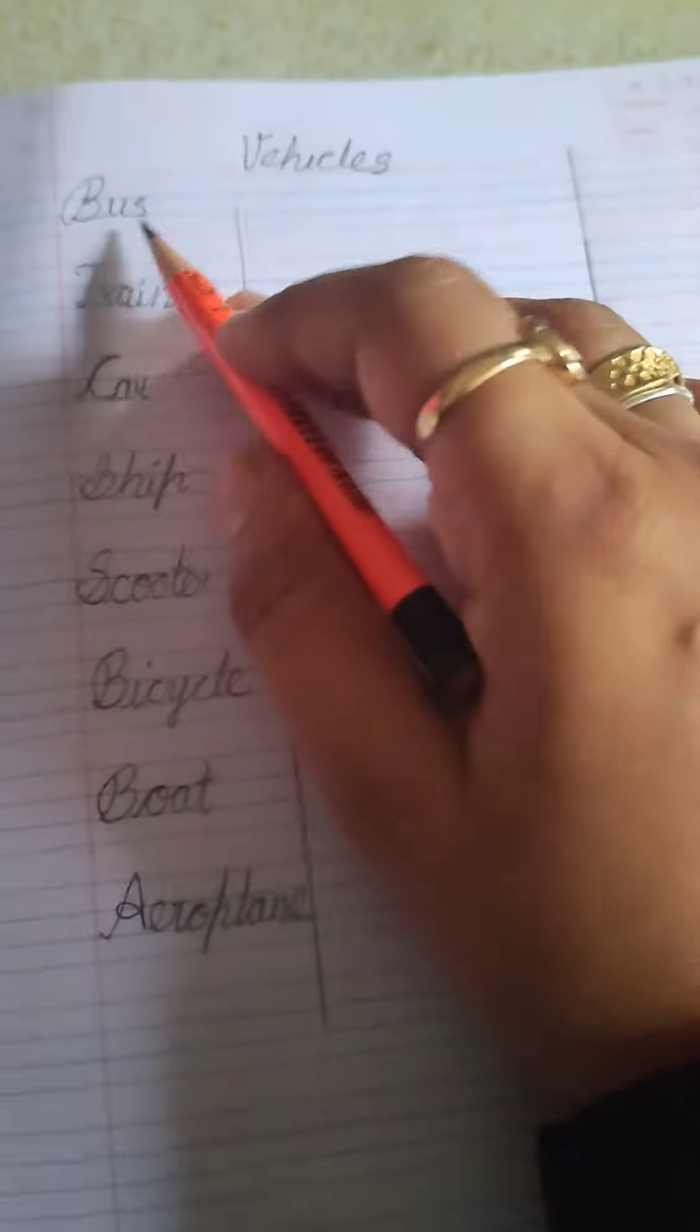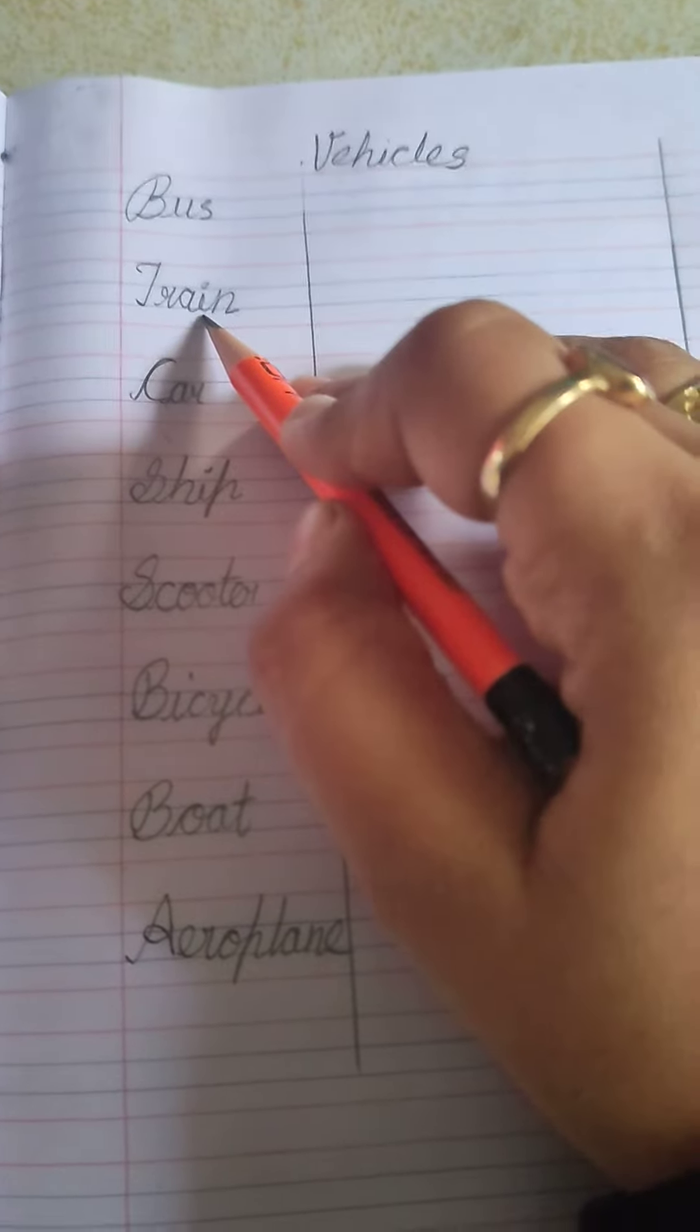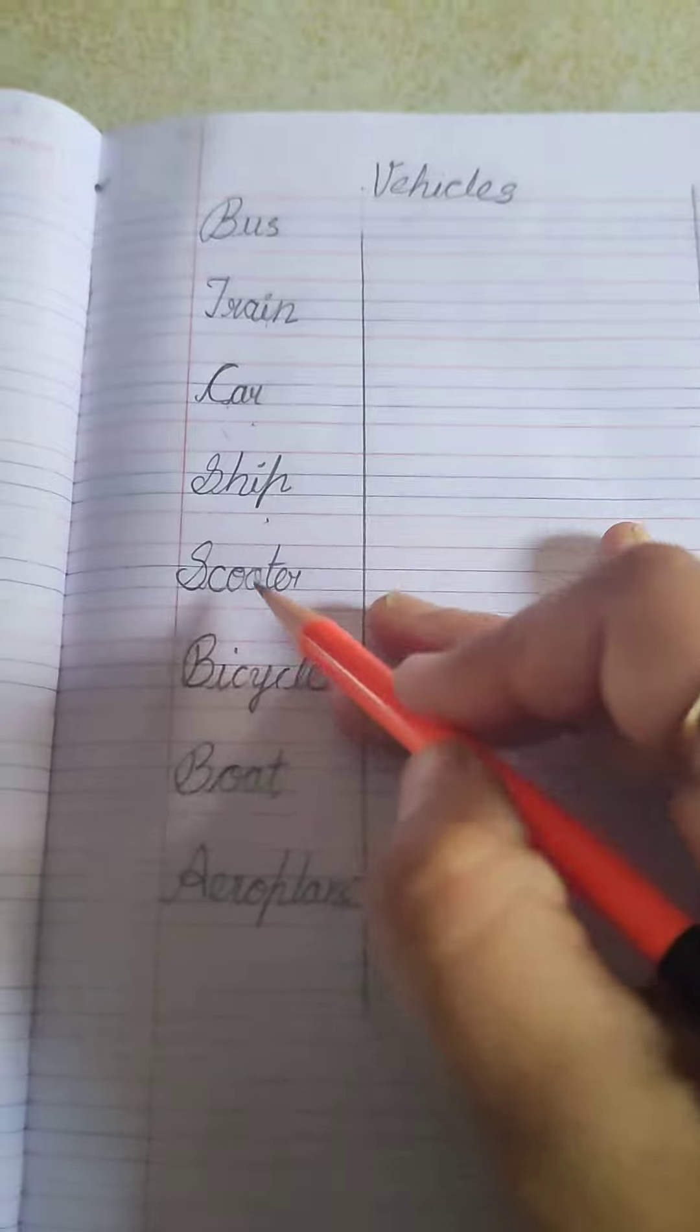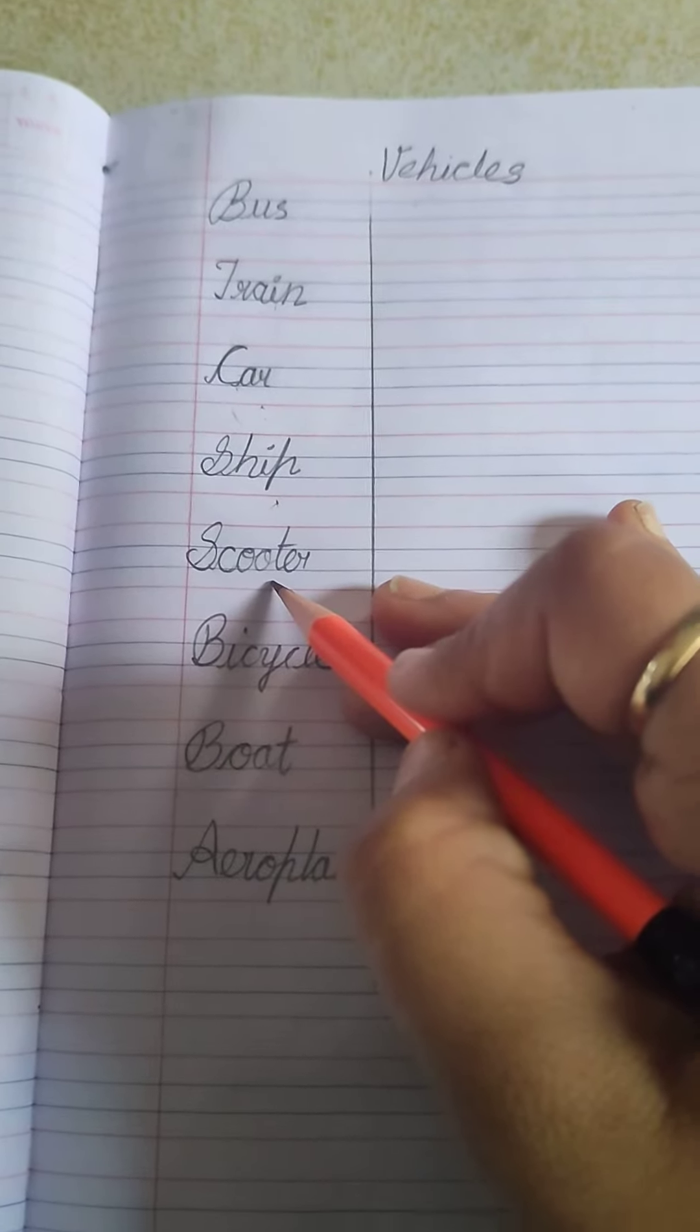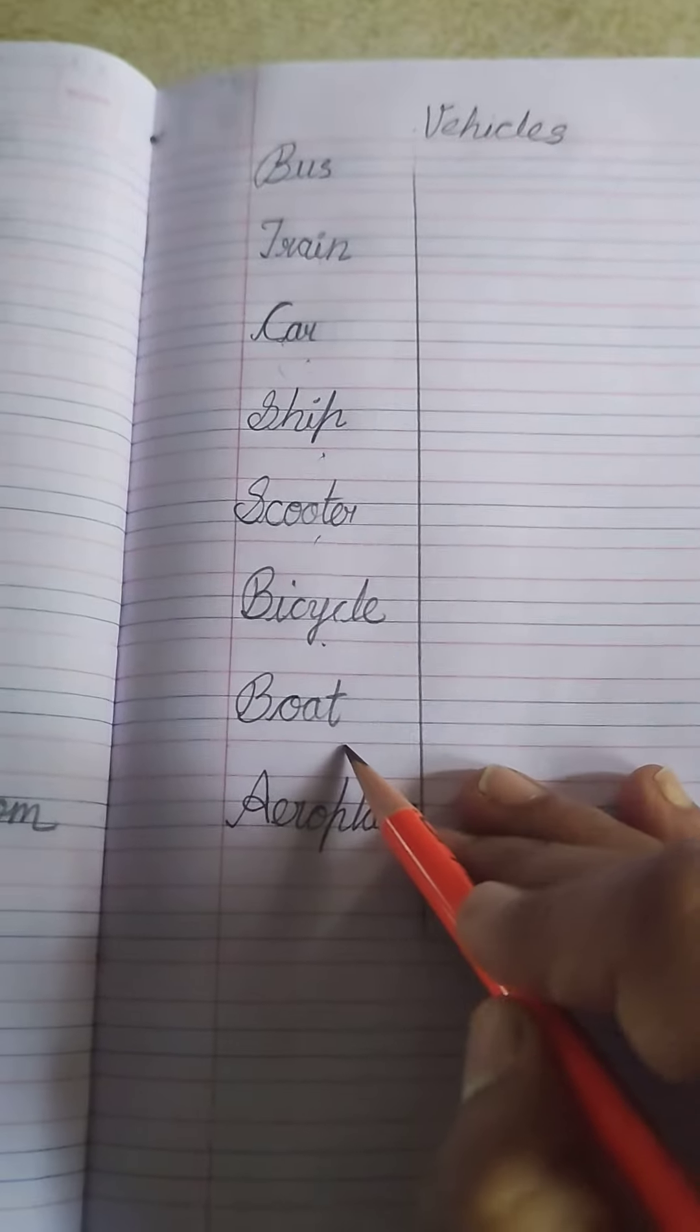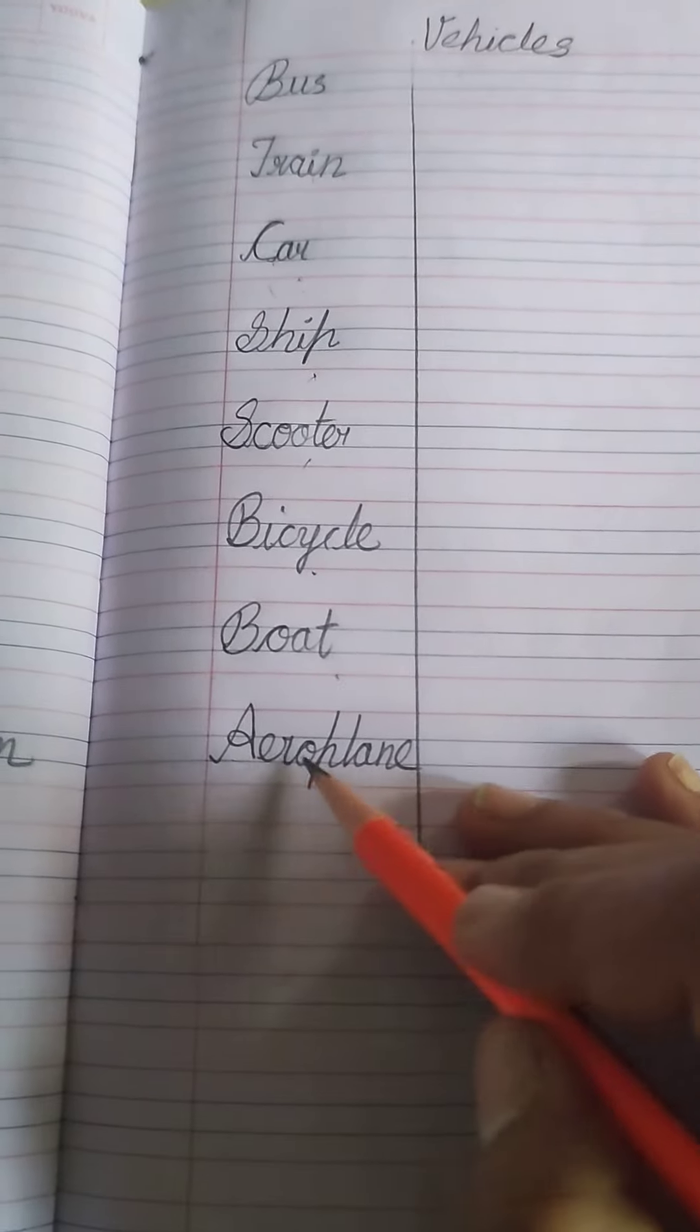First spelling is BUS, TRAIN, CAR, SHIP, SCOOTER, BICYCLE, BOAT, AEROPLANE. Now we will repeat the spellings again.